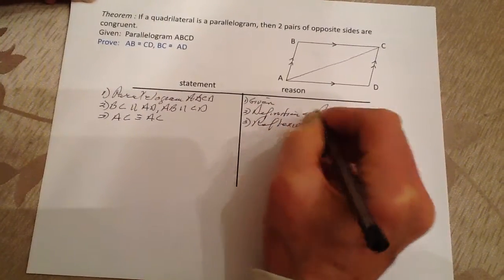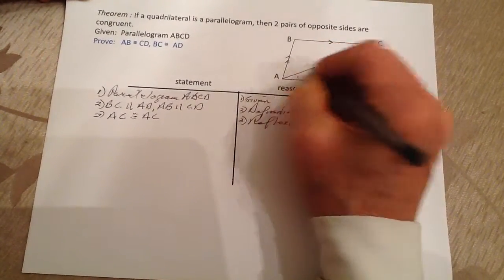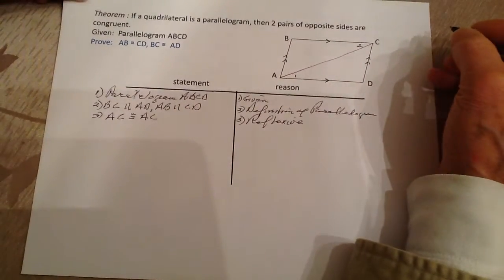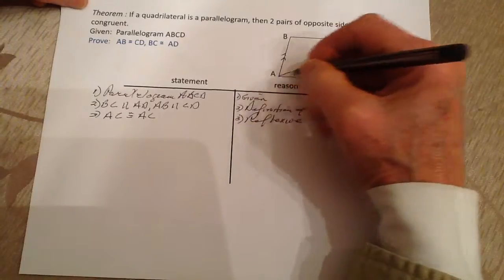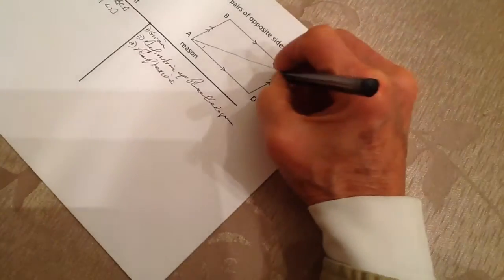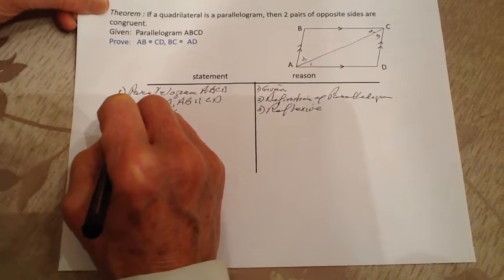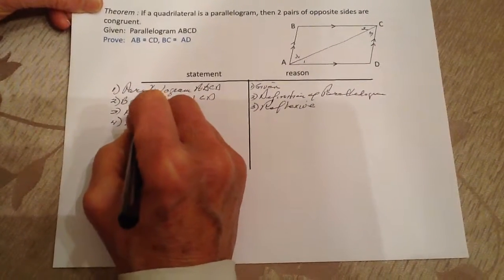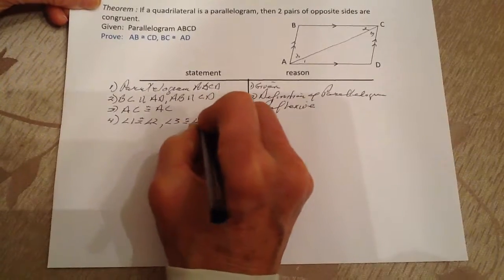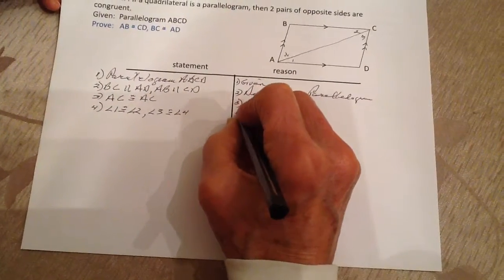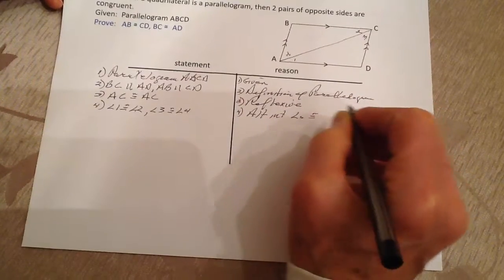Number four: if these two lines are parallel, then angle one and angle two are congruent because they are alternate interior angles. Likewise, if these two lines are parallel cut by a transversal, then angle three is congruent to angle four — because parallel lines have congruent alternate interior angles.